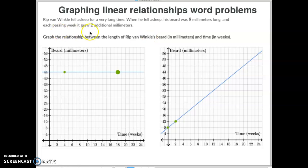Then, it grew an additional 2 millimeters each passing week. So I said, since there was no 10 on here, I decided I'd go, okay, well, if it grows 2 millimeters a week, then it would grow 4 millimeters in 2 weeks. So in 2 weeks, I went up 4 millimeters and I graphed that right there.